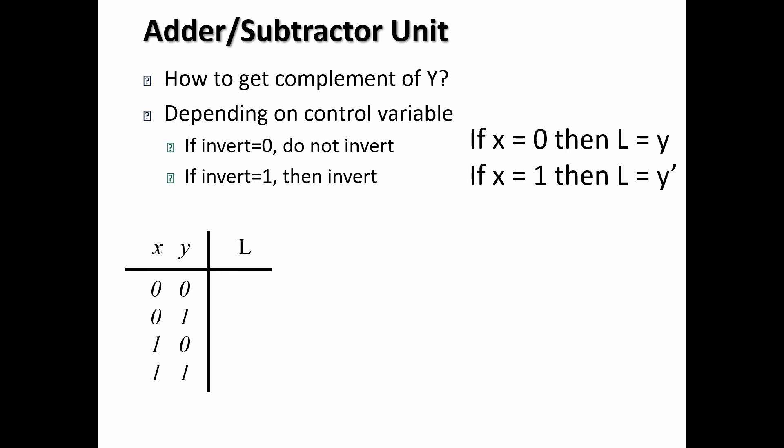So for example, the first row, we have x is a 0. So that means that I don't want to complement. So I just leave a 0, my output. In the case of x is equal to 0, then I don't want to complement. But when x is equal to 1, then I do want to complement the y.